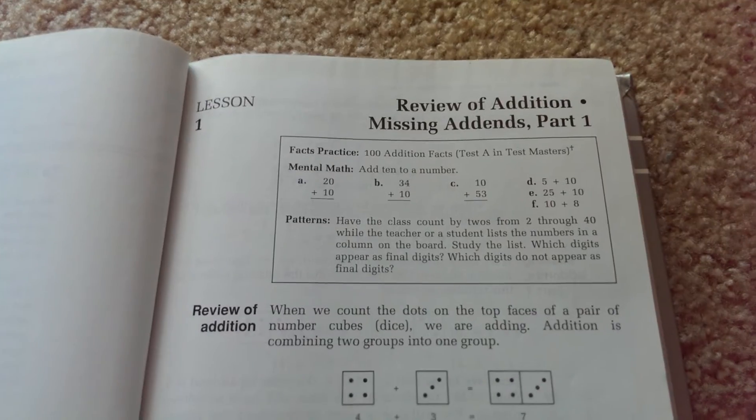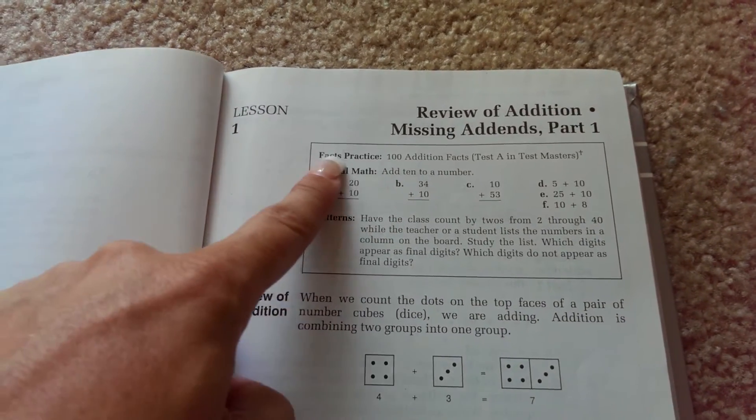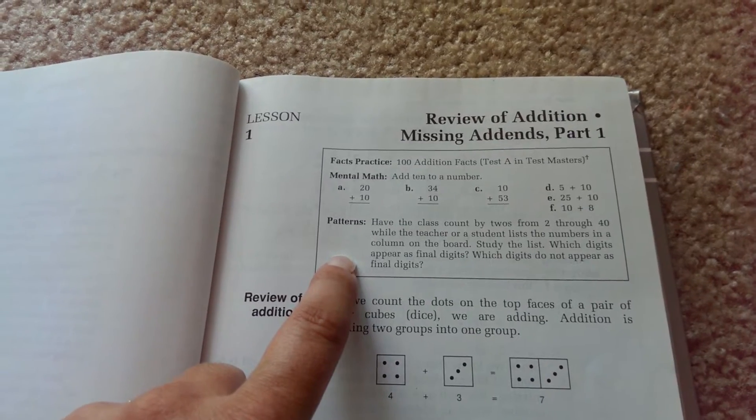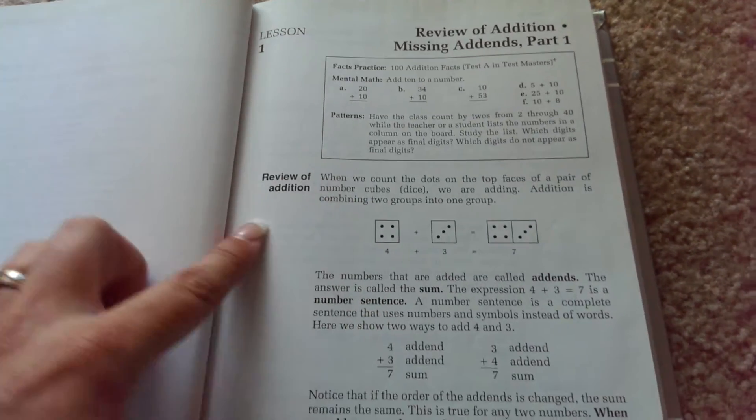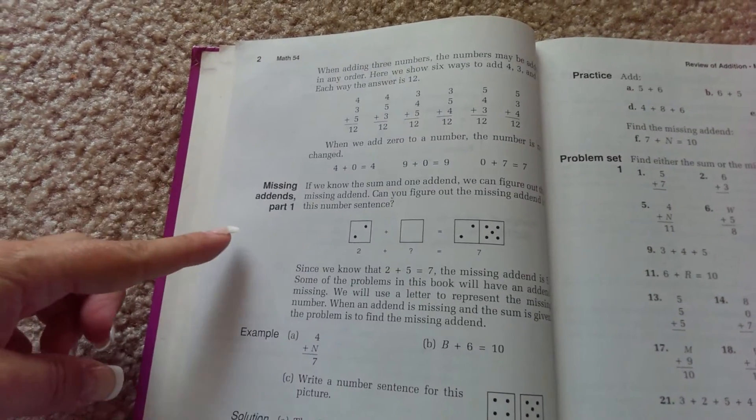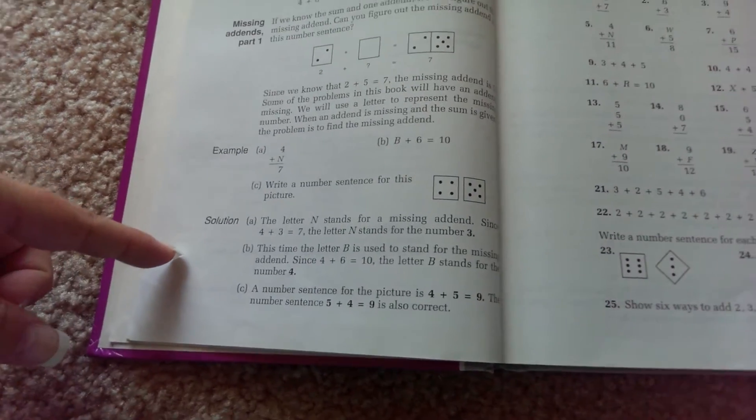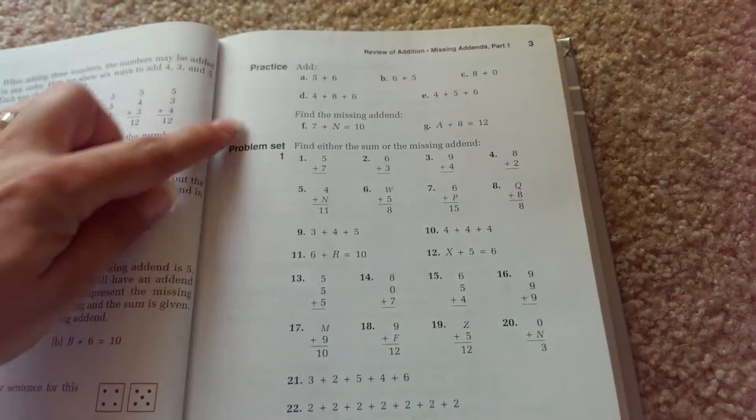And so here's lesson one, and it's got the beginning. I believe this is similar to the third edition, but then it goes into the review of addition over here, and it's got the missing addends part one, an example, a sample, the practice, and the problem set.